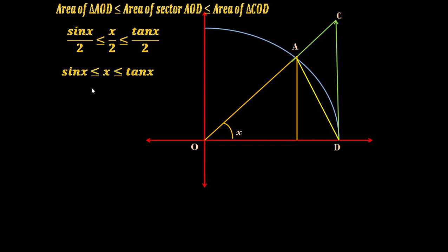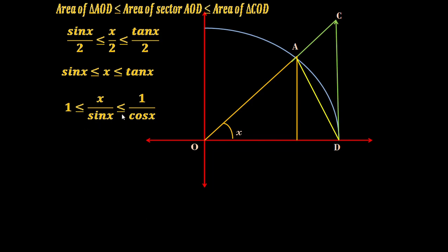If we divide all three terms in this inequality by sin(X), we get: 1 ≤ X/sin(X) ≤ tan(X)/sin(X), which equals 1/cos(X). Now if we take the reciprocal of this, we get the opposite inequality: 1 ≥ sin(X)/X ≥ cos(X). Taking the reciprocal reverses the inequality, so this becomes cos(X) ≤ sin(X)/X ≤ 1.